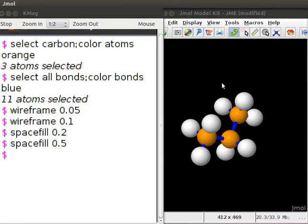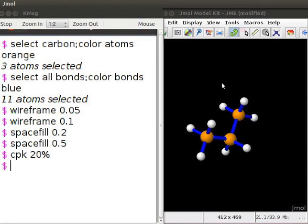Alternately, we can also use command cpk followed by percentage or decimal number. The percentage represents the van der Waals radius of the atom. For example, type cpk 20%. Press Enter. Note the change in the size of the atoms.